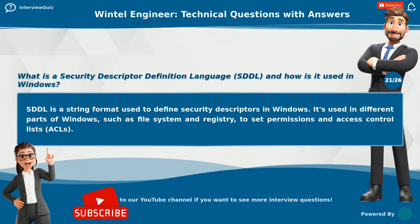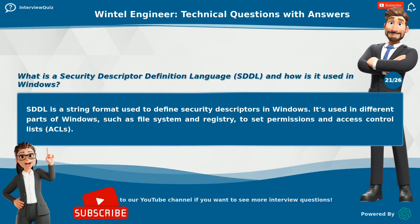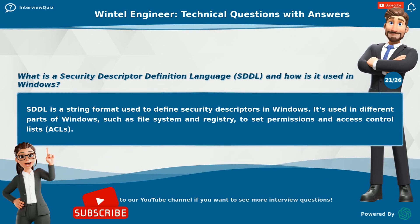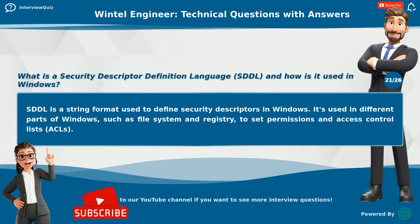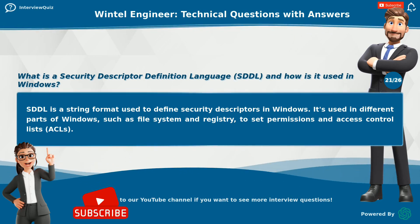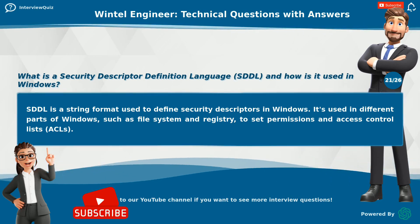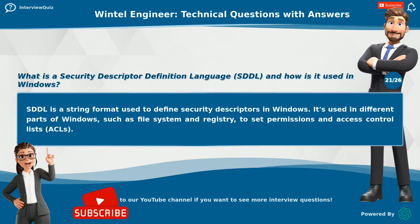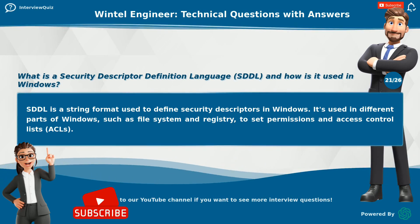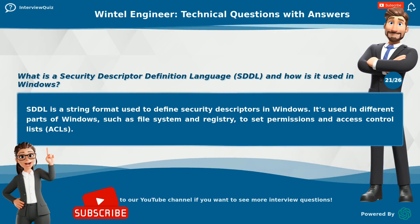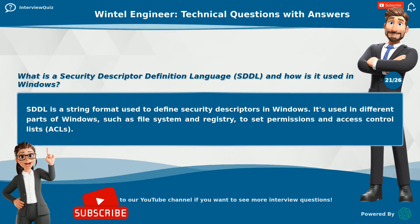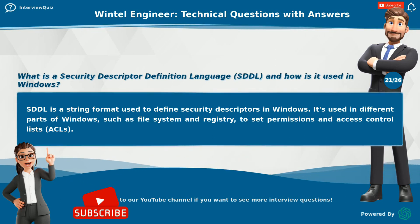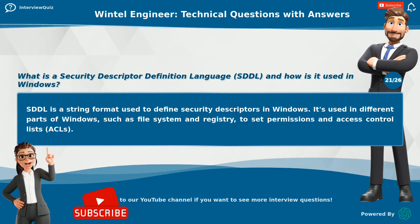What is a Security Descriptor Definition Language, SDDL, and how is it used in Windows? SDDL is a string format used to define security descriptors in Windows. It's used in different parts of Windows, such as File System and Registry, to set permissions and access control lists, ACLs.